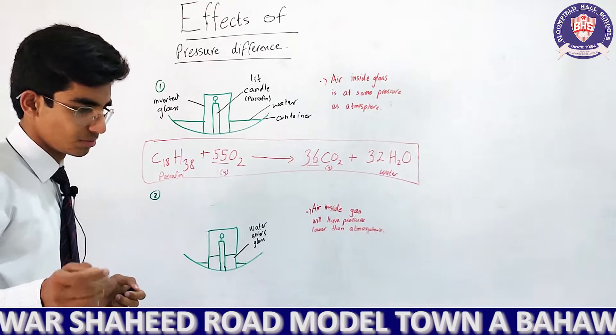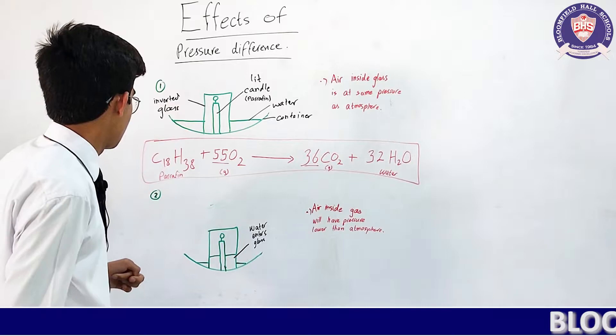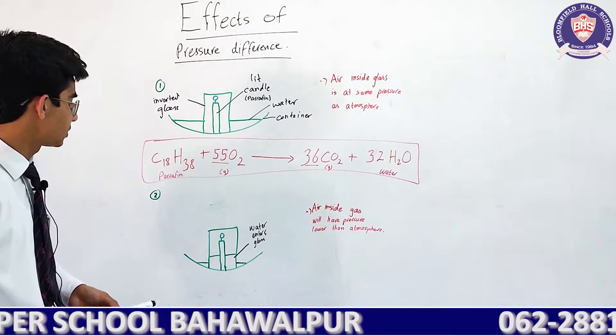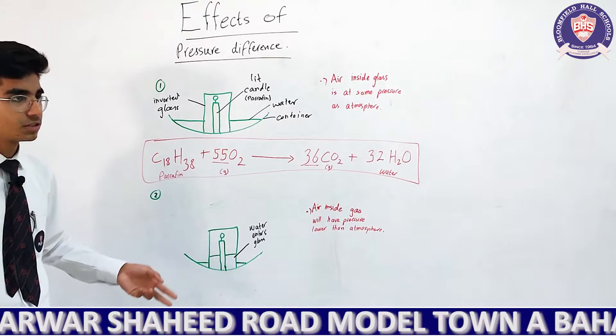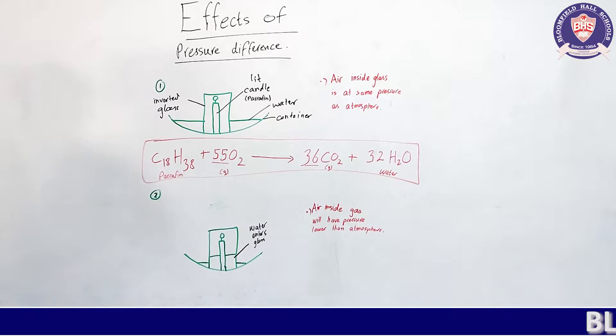So obviously the volume will decrease. Since pressure is inversely proportional to volume, as volume decreases, pressure inside increases — and then decreases once the candle goes out. Because of this pressure difference, the water will rise up inside the glass and decrease in the container outside.